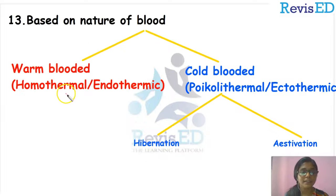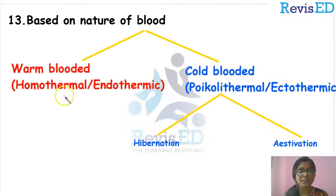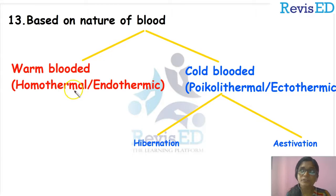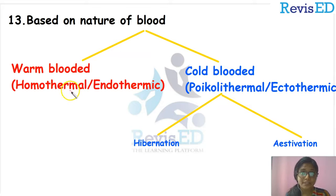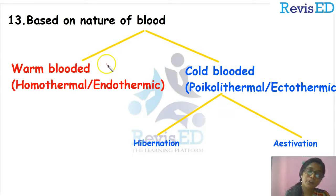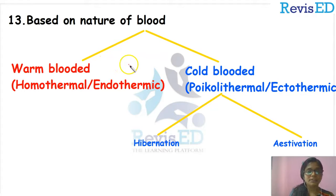So today, we are going to classify animals based on the nature of blood. All of the animals are not having the same nature or same type of blood. Some are cold-blooded animals and some are warm-blooded animals. Let's see what these terms indicate.